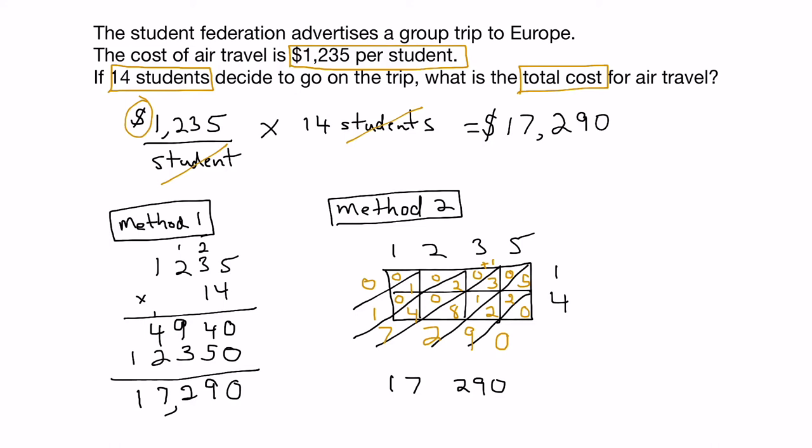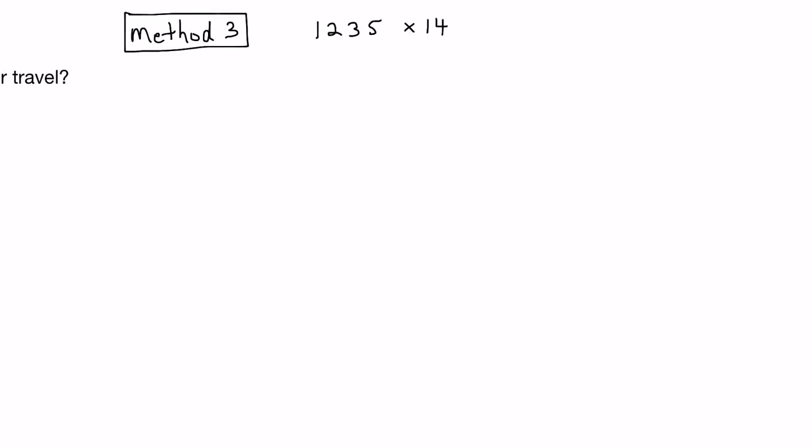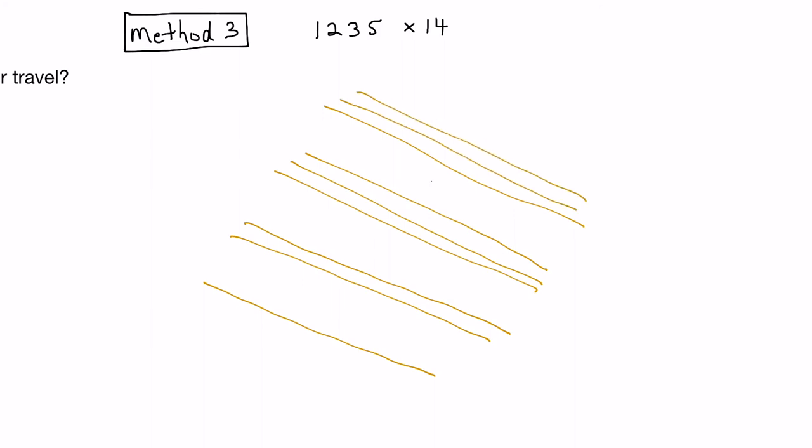OK, let's look at another method. Now what I'm going to do is move over so I can show you this method in more detail. And this method is called the stick method. It goes by other names, but we'll just call it the stick method. And what you do is you start with your largest number. And you draw in diagonal sticks for each of the place values. So we have 1 thousand stick, 2 hundreds sticks, 3 sticks in the tens column, and 5 sticks in the ones column.